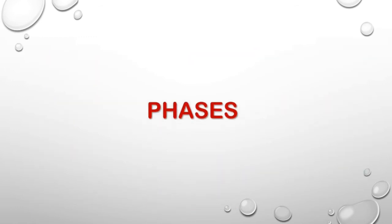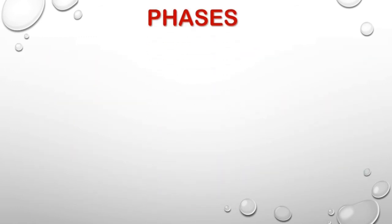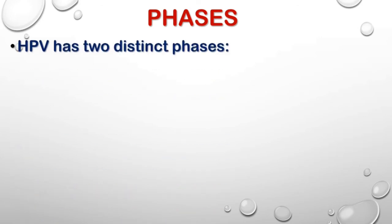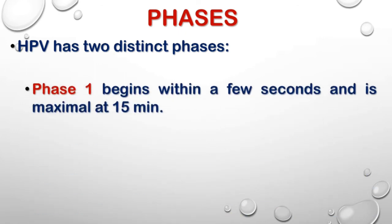Initially, HPV as a reflex contraction of vascular smooth muscle was thought to be a single response which comes and goes as hypoxia develops. But now two distinct phases have been identified. Phase 1 begins within a few seconds and is maximal at 15 minutes. With moderate hypoxia — a partial pressure of oxygen at 30 to 50 mmHg — the response is sustained. But in animal studies of severe hypoxia, a PO2 of less than 30 mmHg, Phase 1 quickly declines again to almost normoxic values.